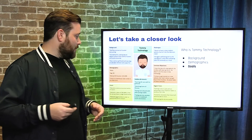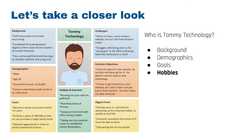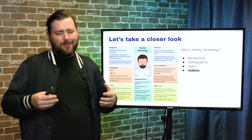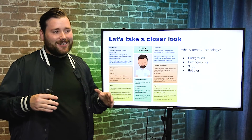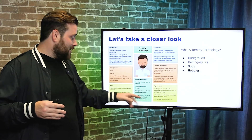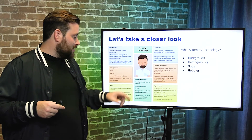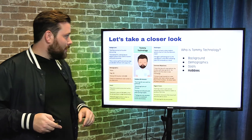His hobbies and interests include running 5K races with his girlfriend, watching Game of Thrones, going out to brunch with other young couples, and taking one nice vacation a year to established tourist destinations. He's probably not the riskiest guy — he likes to go with the flow. Social proof will be important to him because he gravitates toward established, proven options.